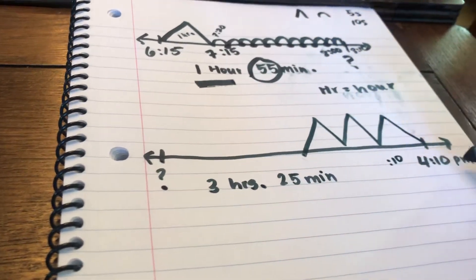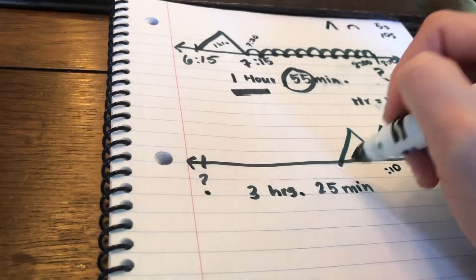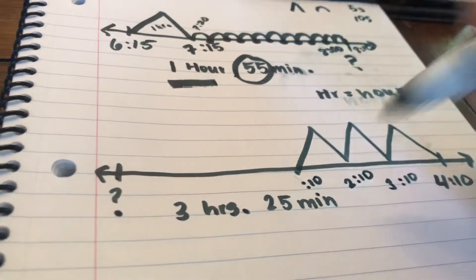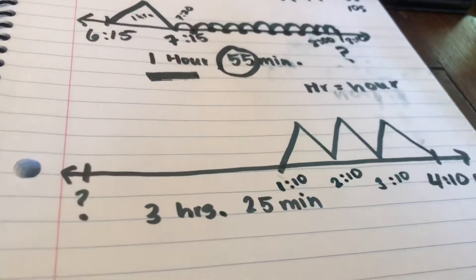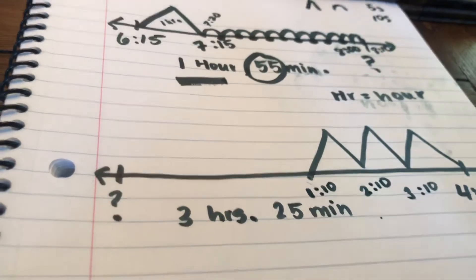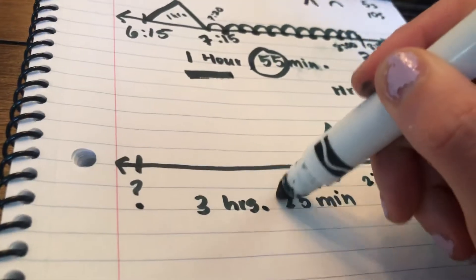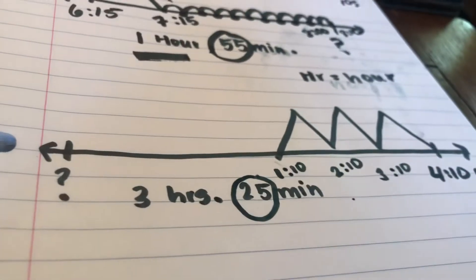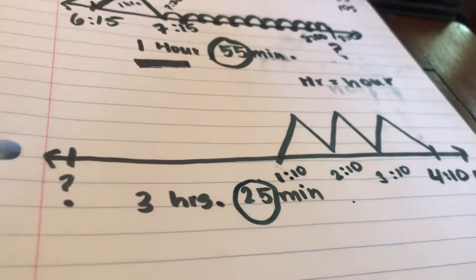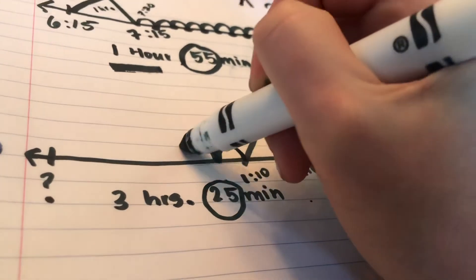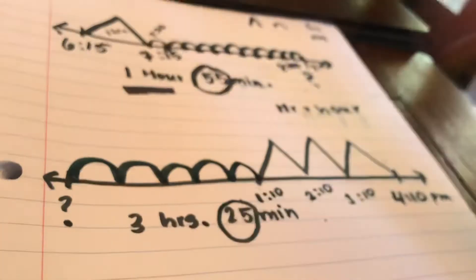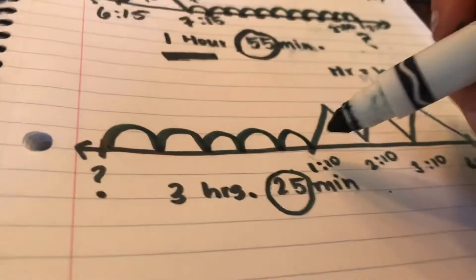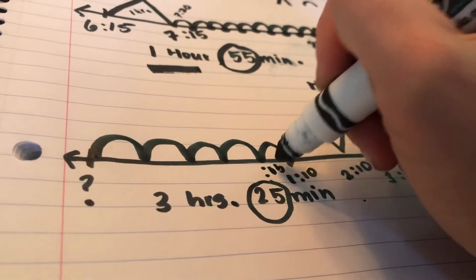I'm going back in time, so I'll keep my 10 because I'm not moving minutes. Jumping back three hours: 4:10, 3:10, 2:10, 1:10. I only changed my hour because those are mountains. But now I need to jump back 25 hills. I like to do minutes in fives or tens, and since 25 is a multiple of five I'll go with fives: 5, 10, 15, 20, 25. Now I have to go backwards from 1:10. Back five would be 1:05.